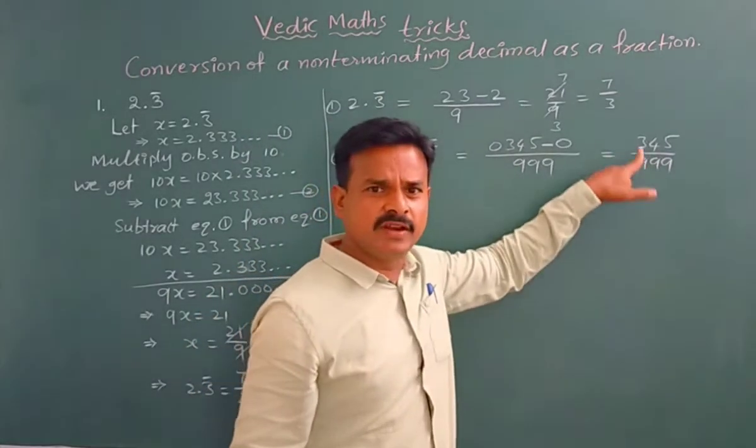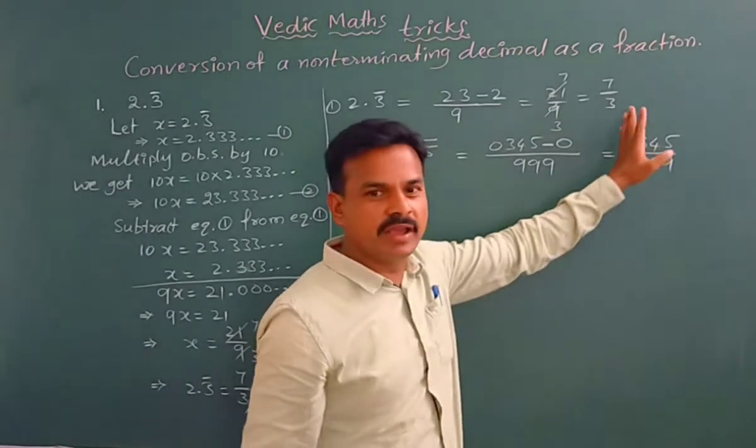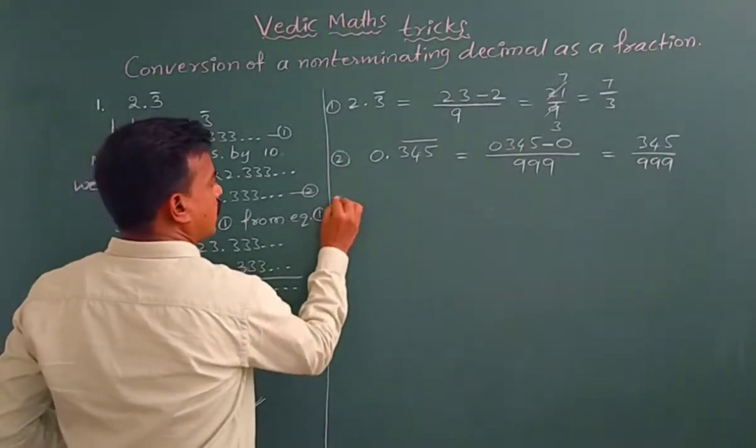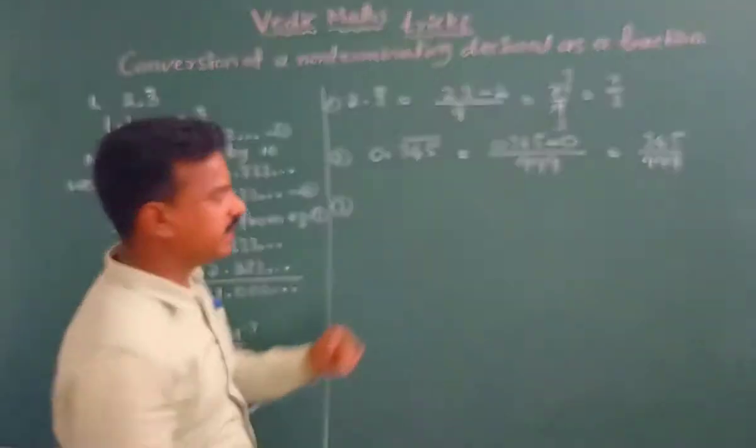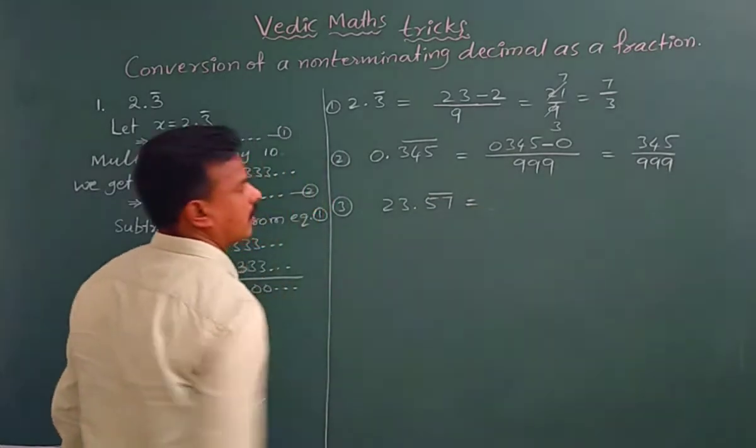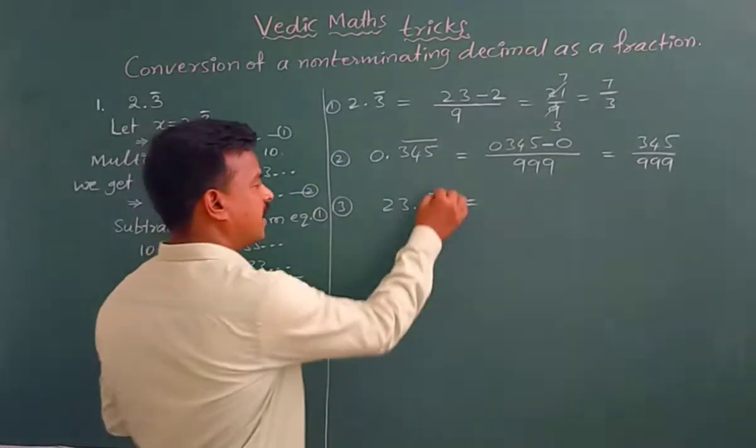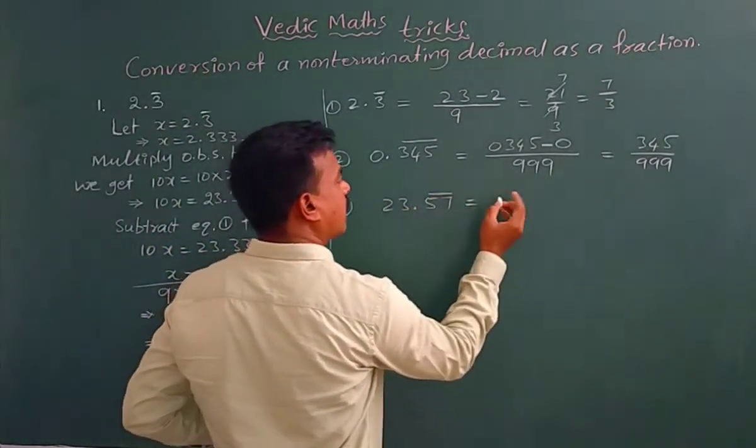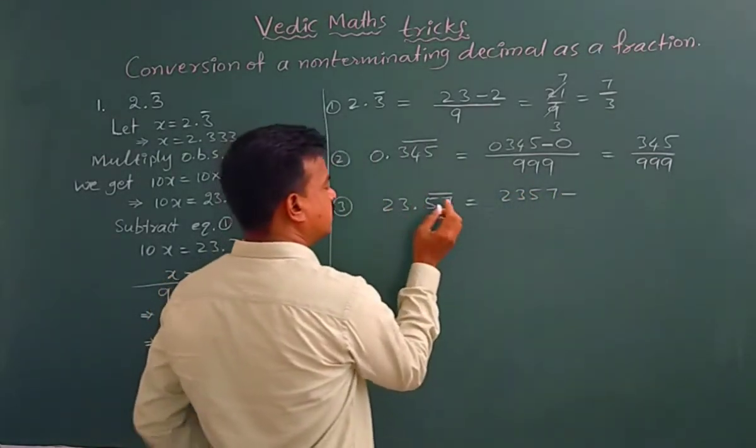So it is equal to 345 divided by 999. If we can simplify this one, we can simplify, no problem. It is divisible by 3 tables. That's why we cannot simplify, so that is the answer. Next, one more example. One more example, these two examples. 23.57 bar. This is the bar for 5 and 7.